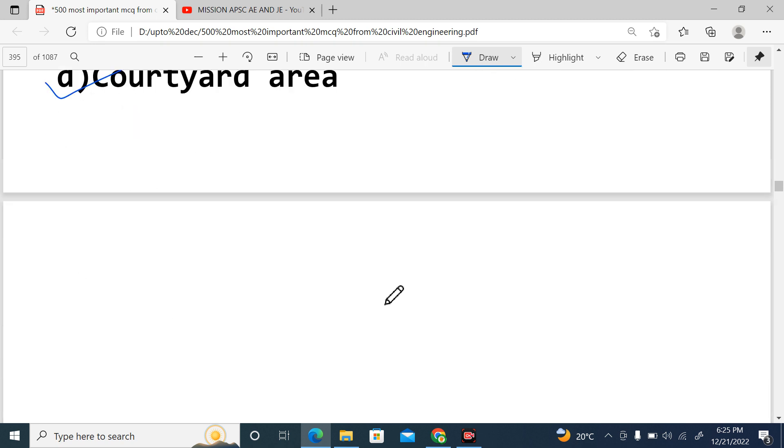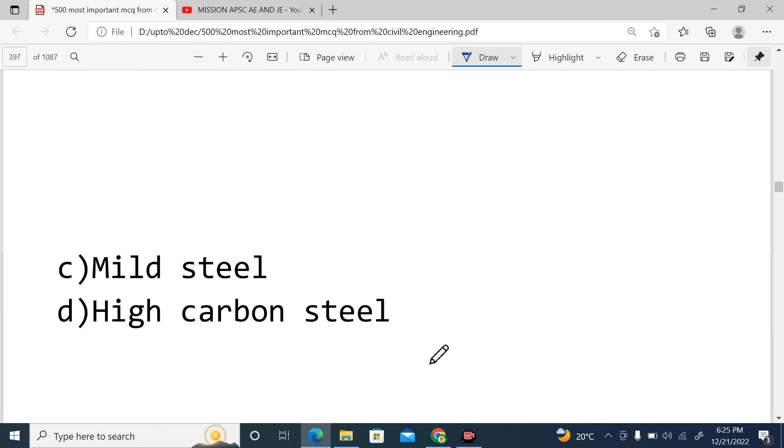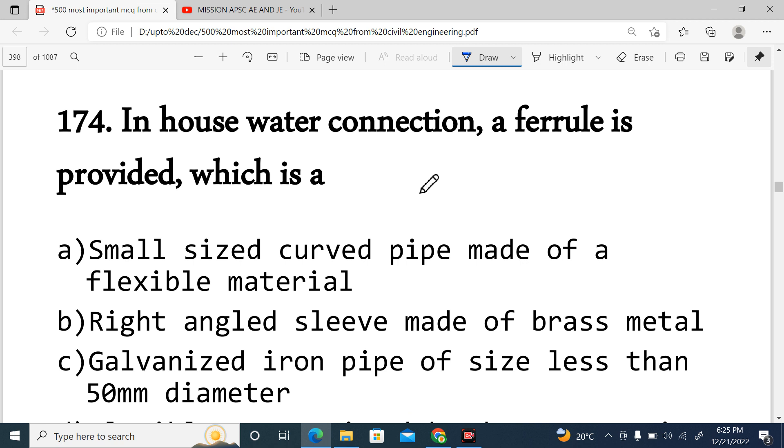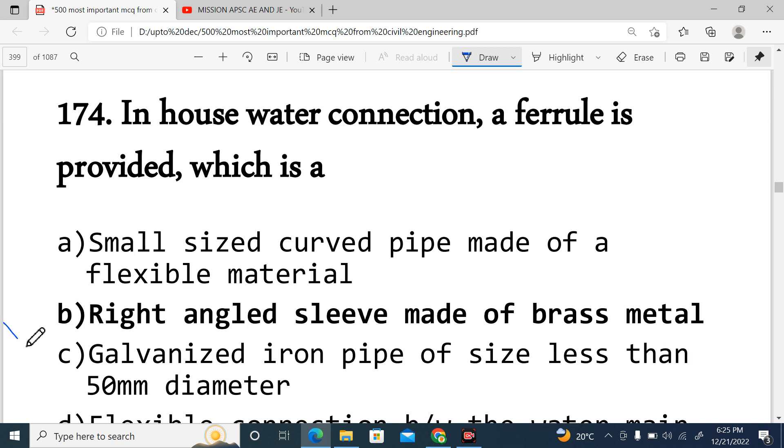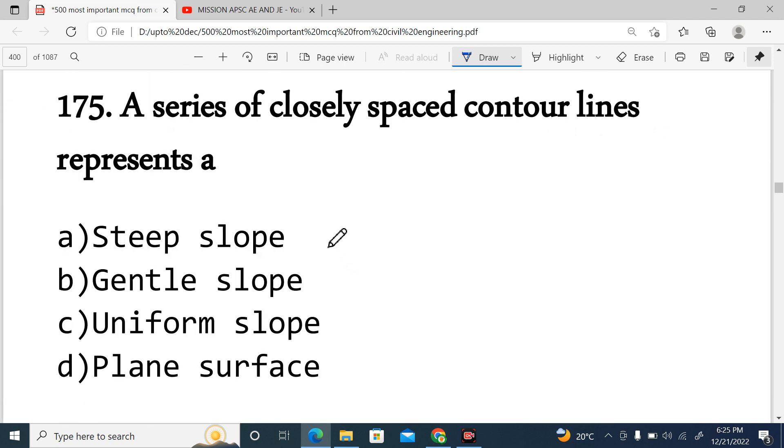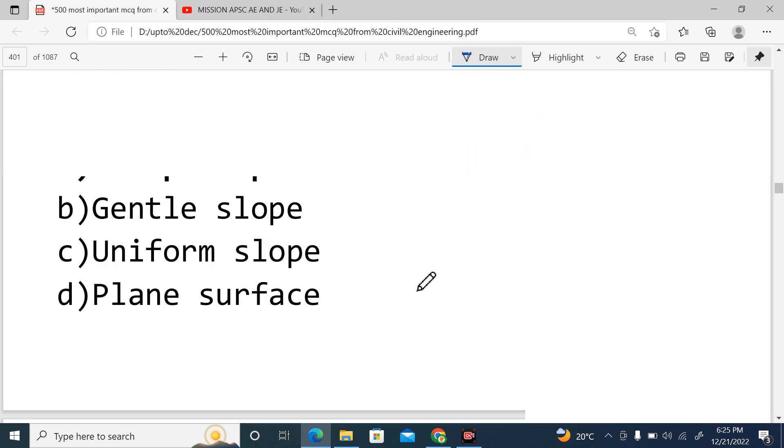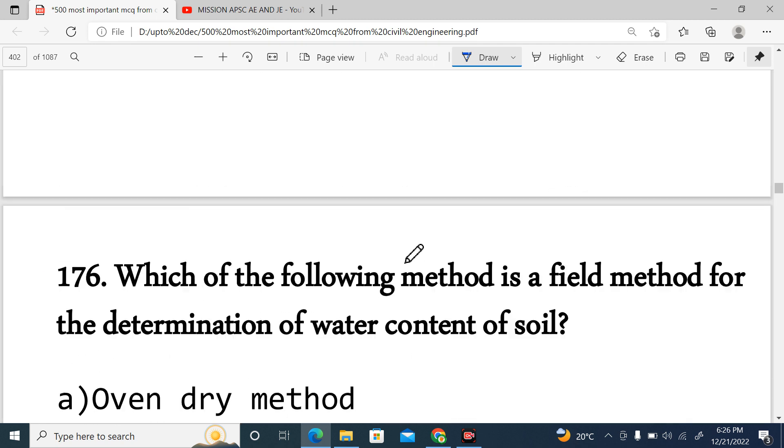Question 173: Which is the purest form of iron? Cast iron, wrought iron, mild steel, or high carbon steel? The purest form of iron is wrought iron, option B. Next, Question 174: In house water connection, a ferrule is provided. Ferrule is nothing but a right angle sleeve made of brass metal. Next, Question 175, the last question of this video: A series of closely spaced contour lines represents steep slope, gentle slope, uniform slope, or plain surface. Closely spaced contour lines means steep slope, option A.